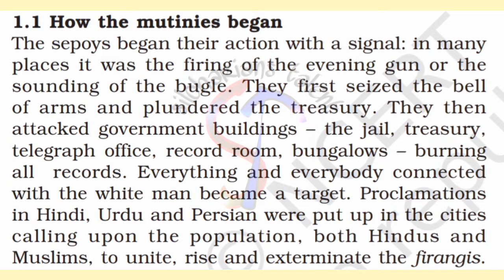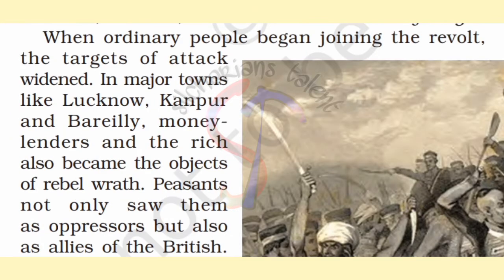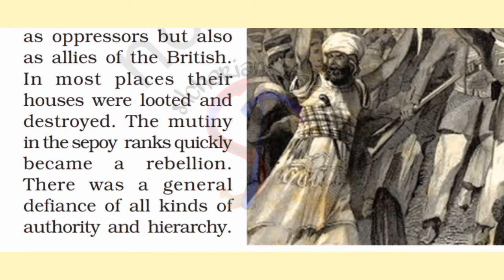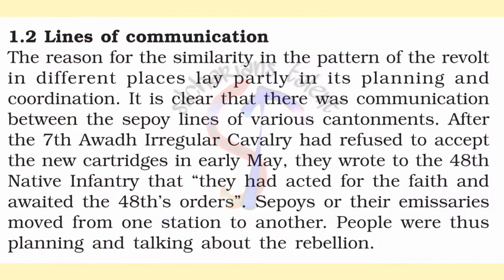After seizing Delhi, the sepoys declared Mughal Emperor Bahadur Shah as their leader. After the involvement of ordinary people, the targets of the attacks widened. Moneylenders and the rich became targets in major towns like Lucknow, Kanpur, and Bareilly. Their houses were looted and destroyed. The mutiny of the sepoys quickly took on the role of a rebellion.